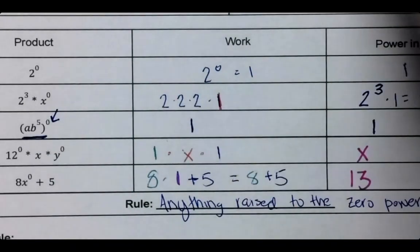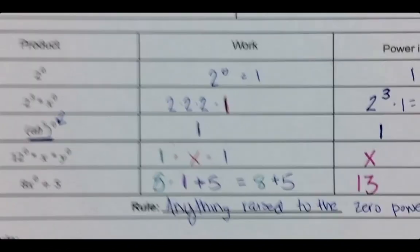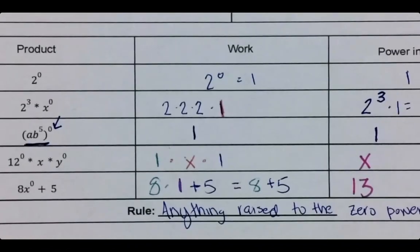So again, anything raised to the zero power is one. But you have to watch because not everything is necessarily to the zero power in the thing that you got, in the expression that you got. Great job so far. We'll come back and do the quotient rule.